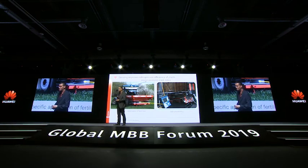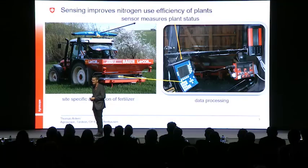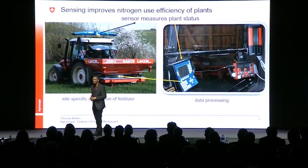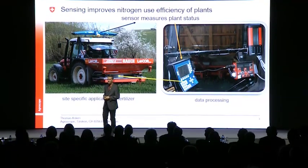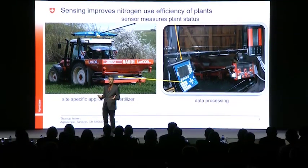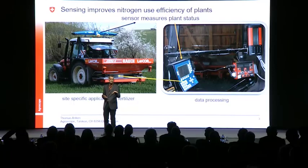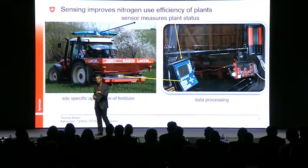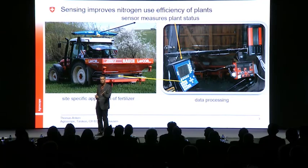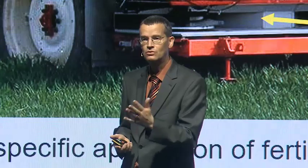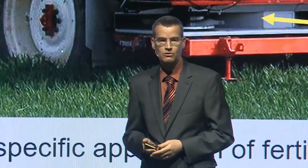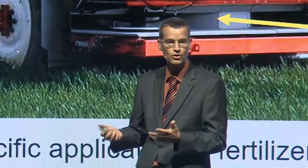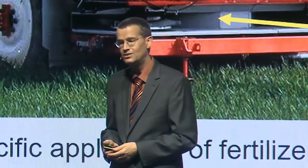Here is a simple regulation cycle. We have a sensor on the tractor roof and a computation unit, and it only makes the distinction between dark green and light green plants. This is quite a good parameter to know how well the plant is fed, and then we give more or less fertiliser to a plant.